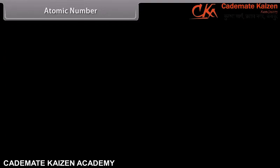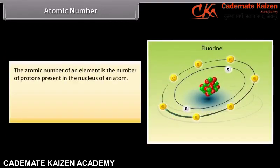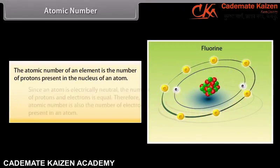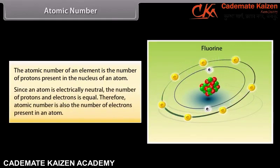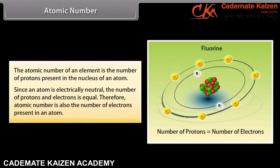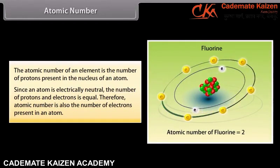Atomic Number. The atomic number of an element is the number of protons present in the nucleus of an atom. Since an atom is electrically neutral, the number of protons and electrons is equal. Therefore, atomic number is also the number of electrons present in an atom.